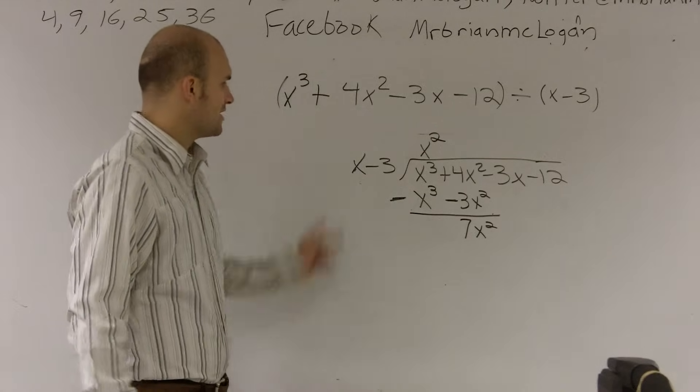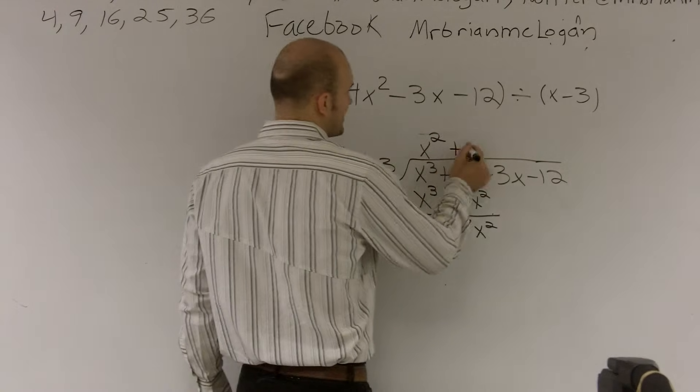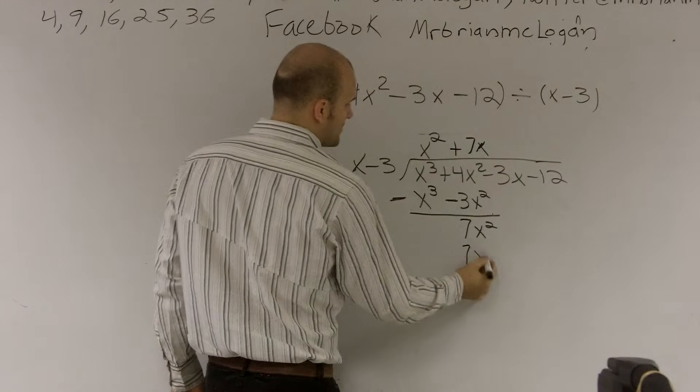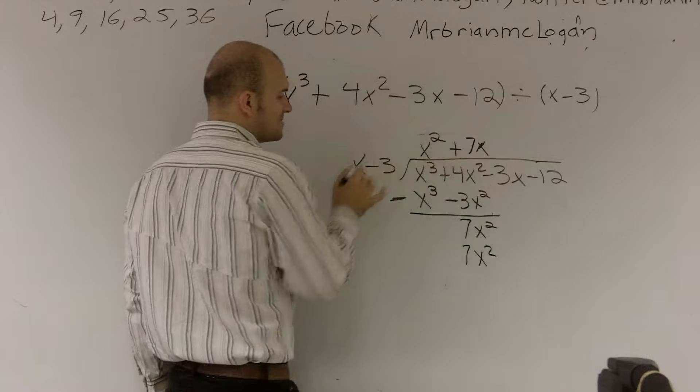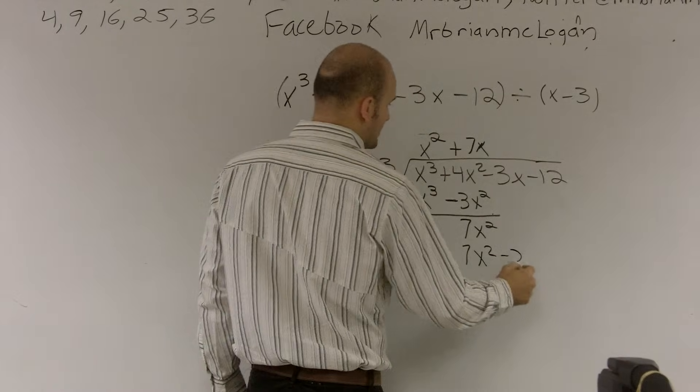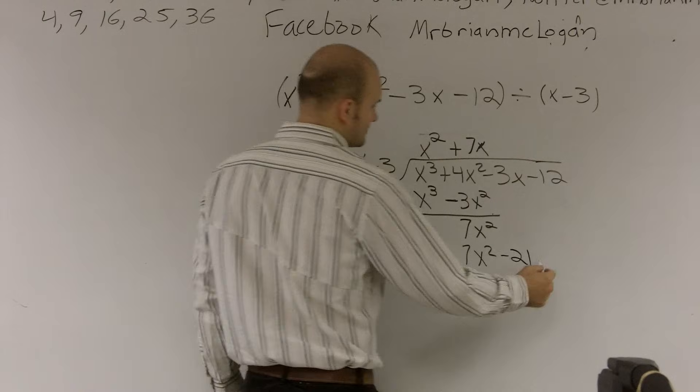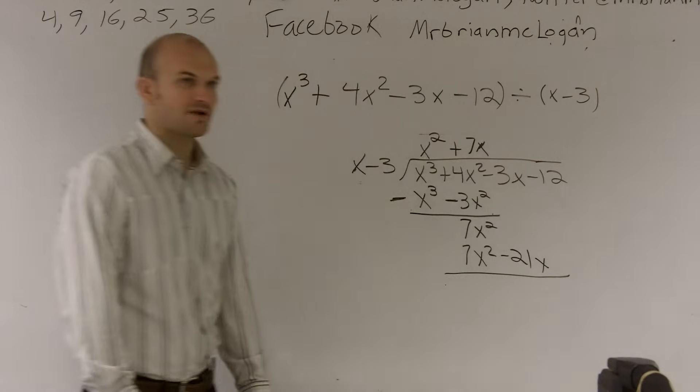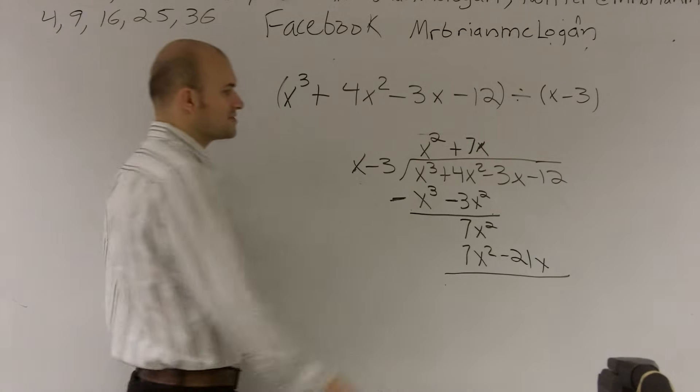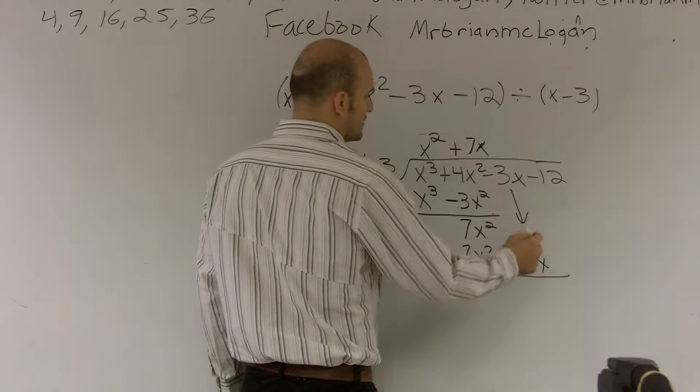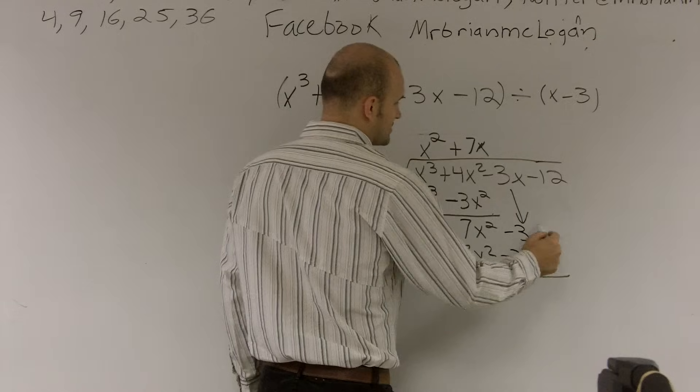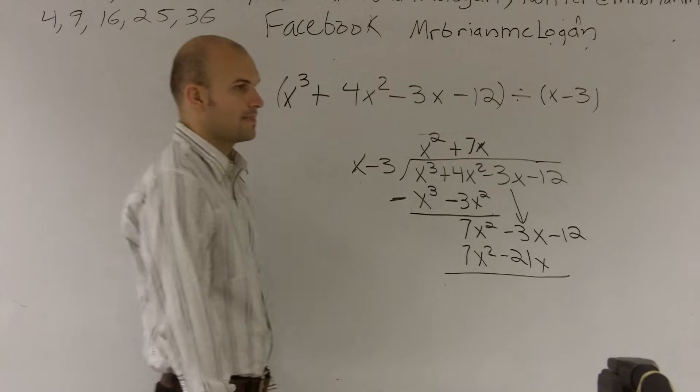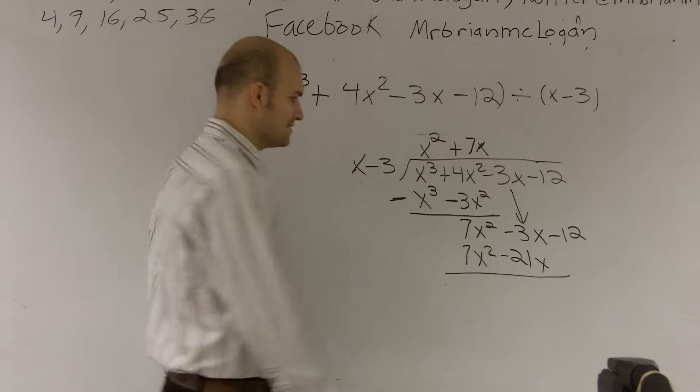And so now I say, x goes into 7x squared, it goes in there 7x times. 7x times x is 7x squared. 7x times negative 3 is a negative 21x. Now I have nothing to subtract my negative 21 from, so that's why I can bring down a negative 3x, and I'll bring down the negative 12, just so the negative 12 is not alone. And this cancels out to 0.